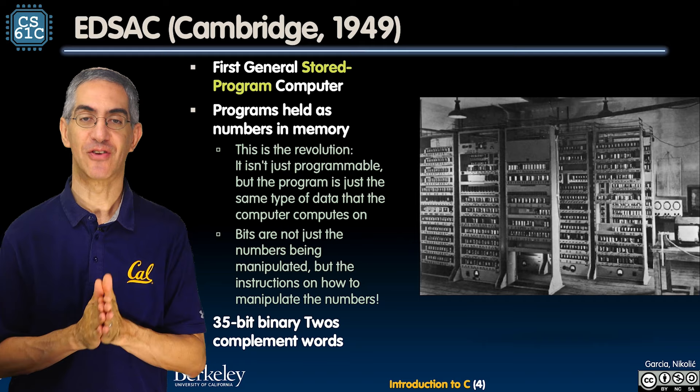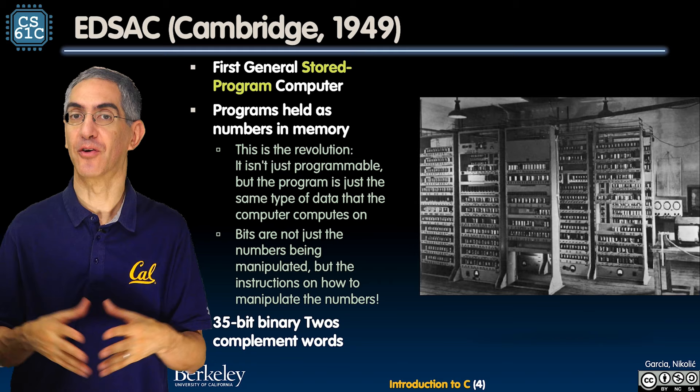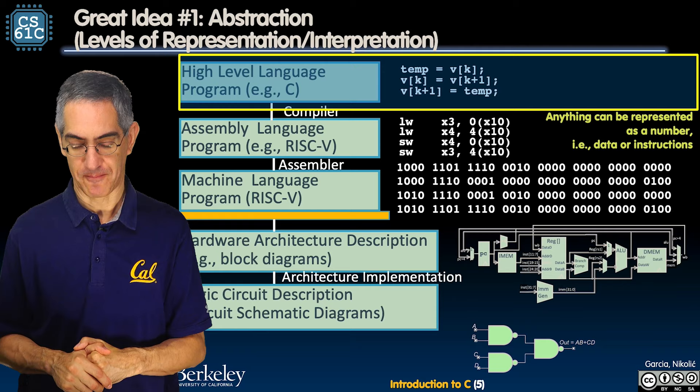EDSAC had a 35-bit binary two's complement word. As my colleague Nick Weaver says, who knows why they did that? It seems good at the time — there might be some technical reasons — but it's lost to history why they used that rather than a power-of-two word width.